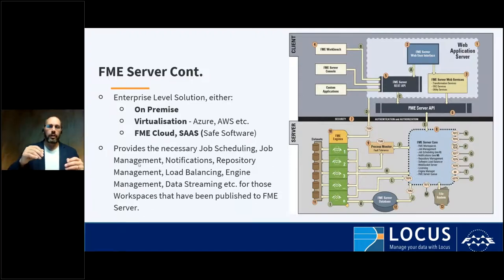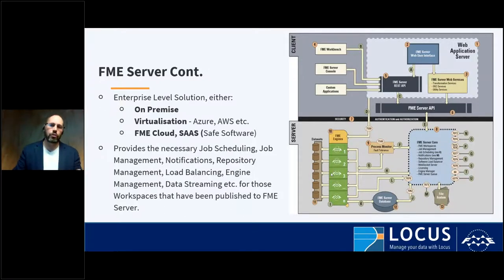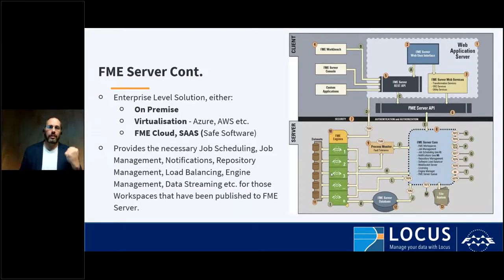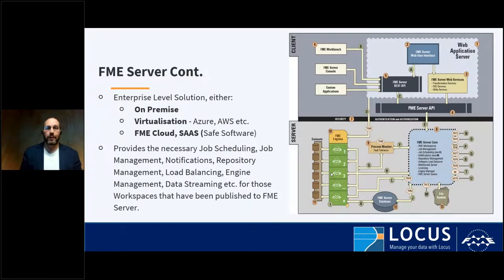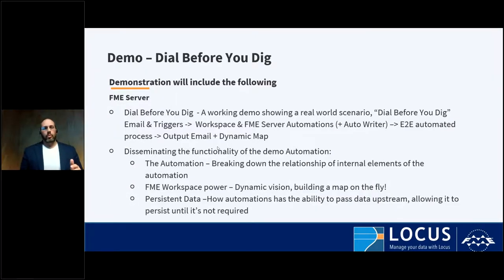The server core provides all the necessary job management, notifications, and repositories. Engines are important to understand: if you have one engine, you can run one workspace at a time. If you have two engines, you can run two workspaces simultaneously. If you have three processes you want to run with only two engines, something gets queued — but that's all managed by FME Server core and can be configured to suit your needs.